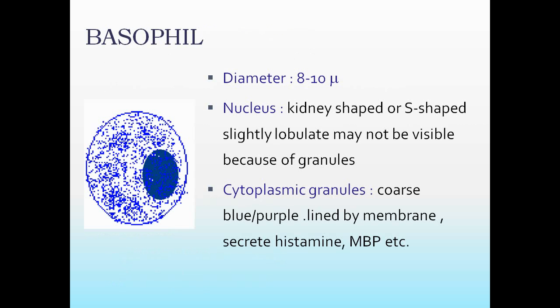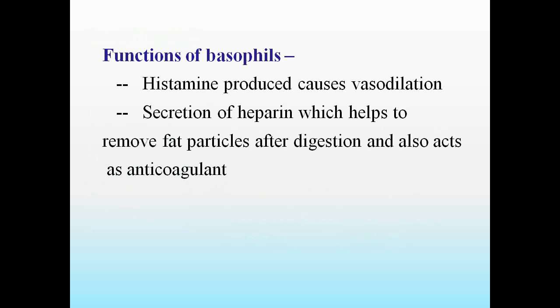The third granulocyte is the basophil. Diameter is about 8 to 10 microns. Nucleus is kidney-shaped or S-shaped, slightly lobulated, and may not be visible because of granules. Cytoplasmic granules are coarse, blue or purple, lined by a membrane, and secrete histamine or MBP. Functions: histamine produces vasodilation; secretion of heparin helps remove fat particles after dilution and also acts as an anticoagulant.